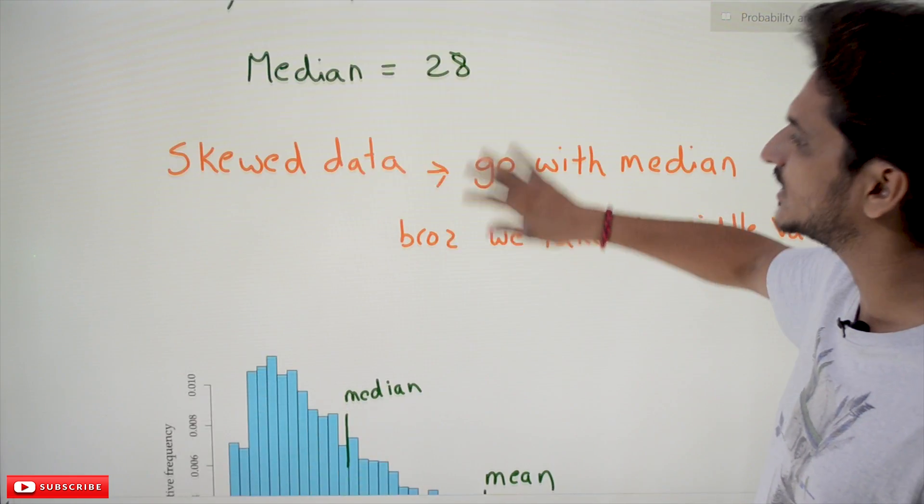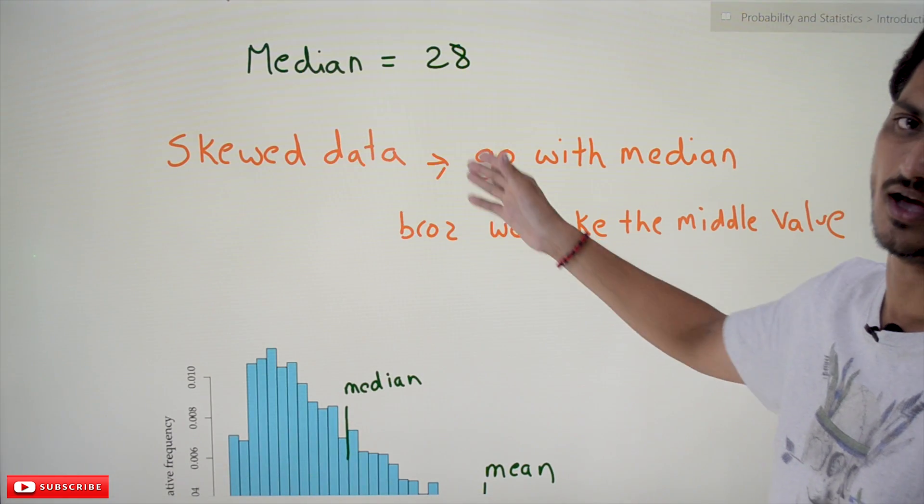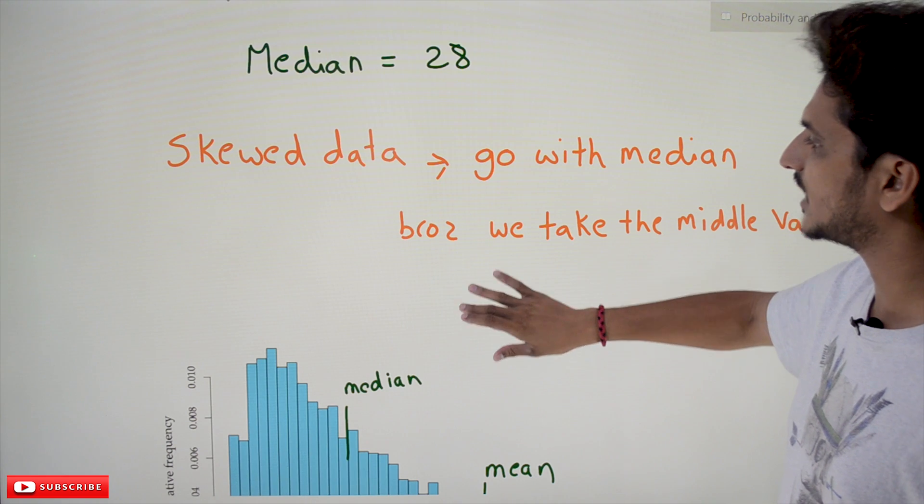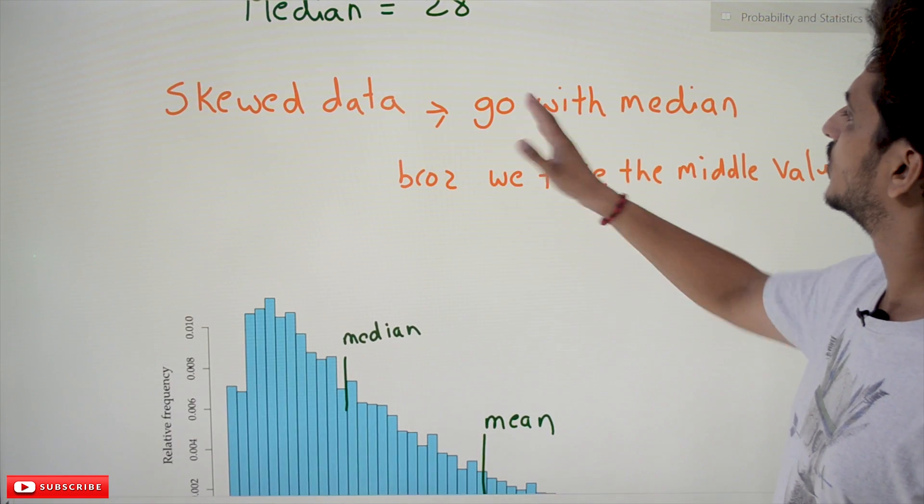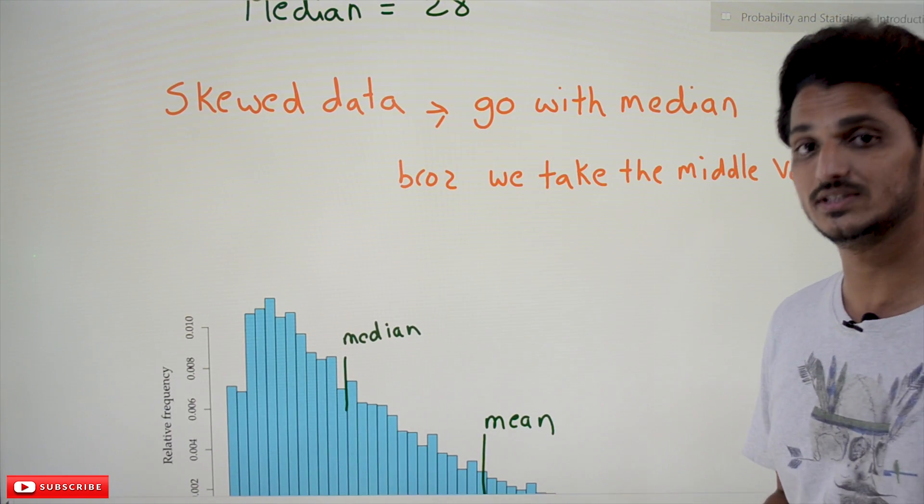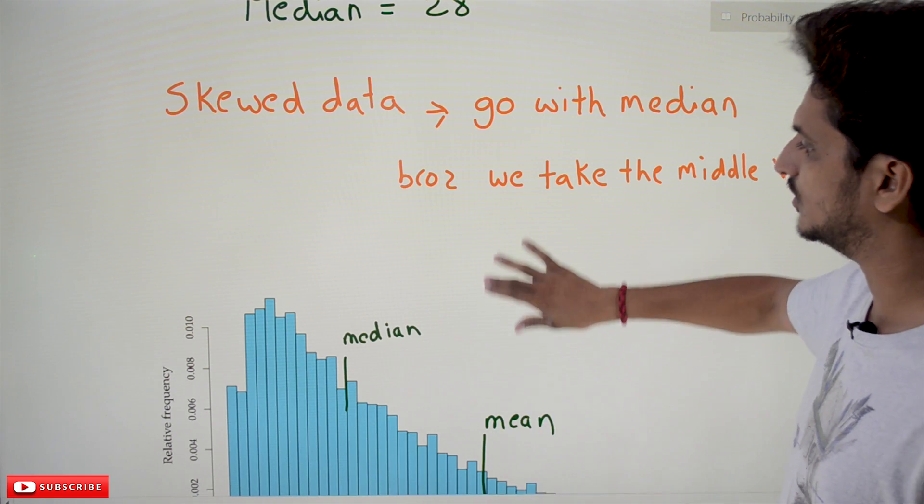The next one is if you have skewed data. In our last class we discussed right and left skewed data. Go with median value whenever you have skewed data. Go with the median value.